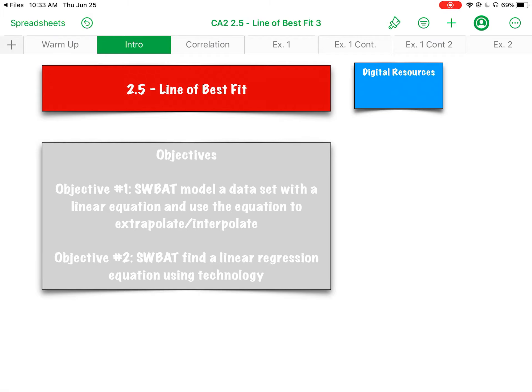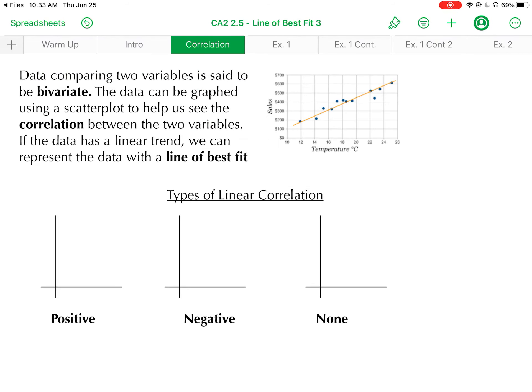Here we're in section 2.5. We're looking at taking a data set and representing it with a linear equation, often referred to as a line of best fit. What we're doing here is comparing data of two variables, often referred to as bivariate data. When you compare that data, you can graph it in a scatter plot to see if there's any type of correlation between the two variables. That correlation could potentially be linear, quadratic, exponential, logarithmic, etc. We're focusing in this video on a linear correlation. If the data has a linear trend, we're going to try to represent the data with a linear equation, often referred to as a line of best fit.